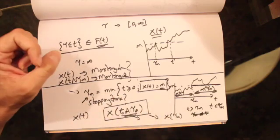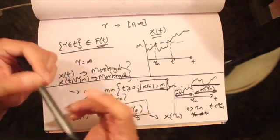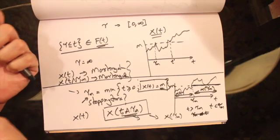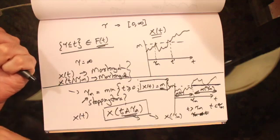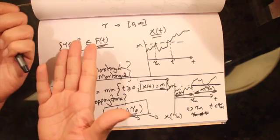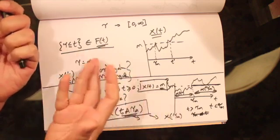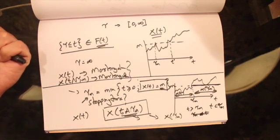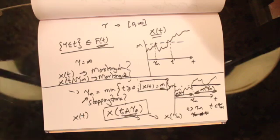The first example we're going to look at is a perpetual American put. We're going to see how we can price the perpetual American put, and in doing so we will use the concepts of stopping time and first passage time.